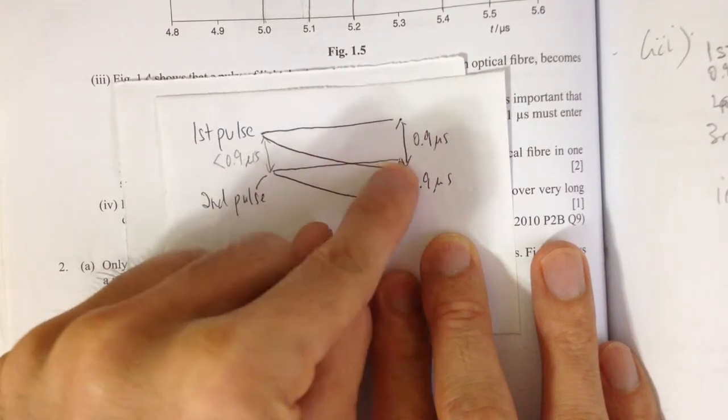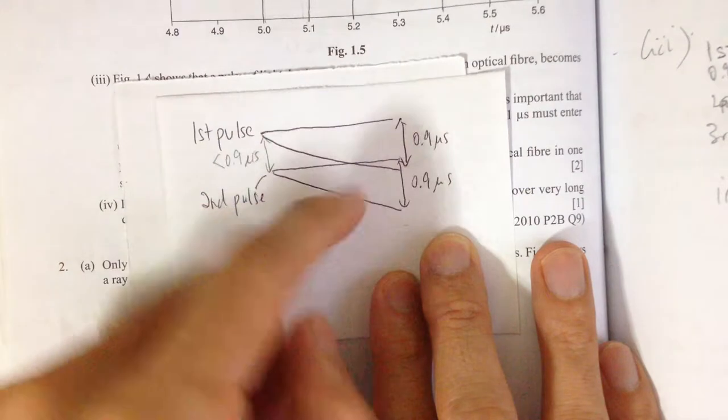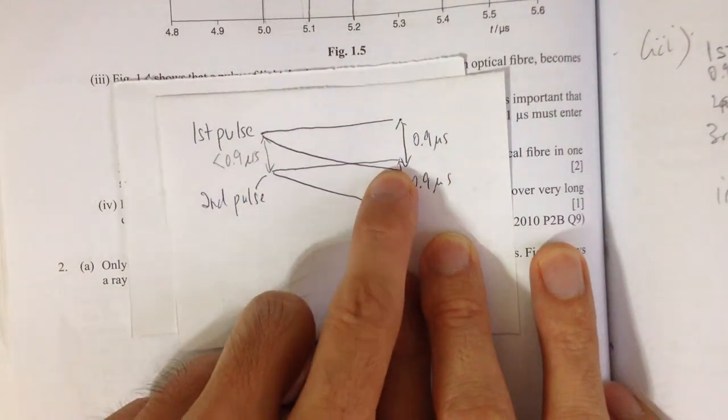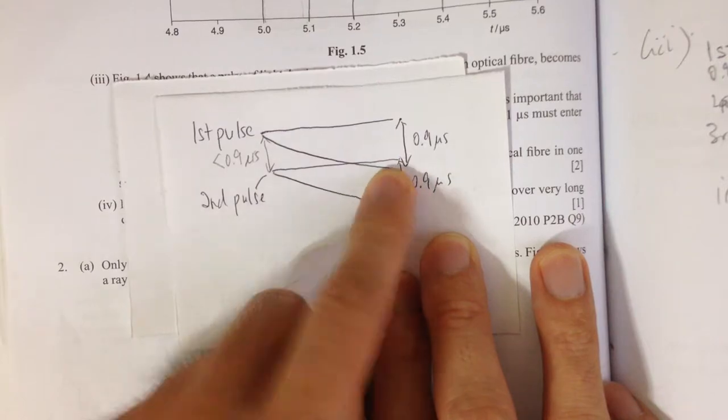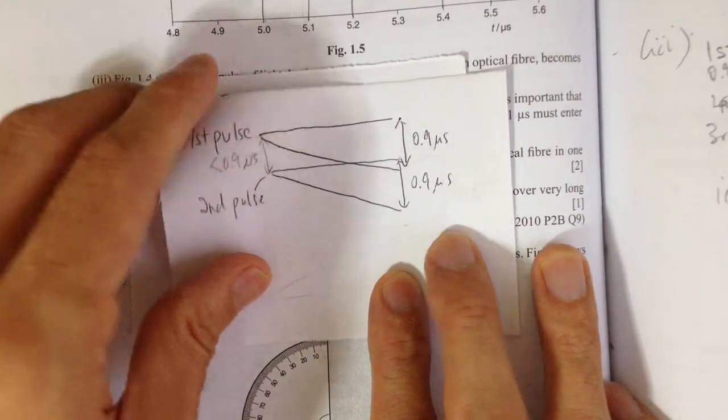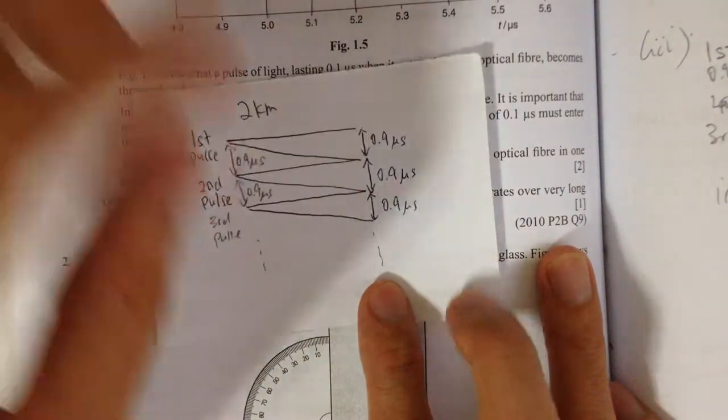This overlapping will cause confusion in the receiver because they do not know this pulse is from the first pulse or the second pulse. It's confusing. So that's why there must be a minimum distance of 0.9.